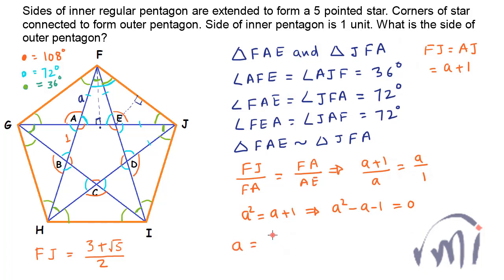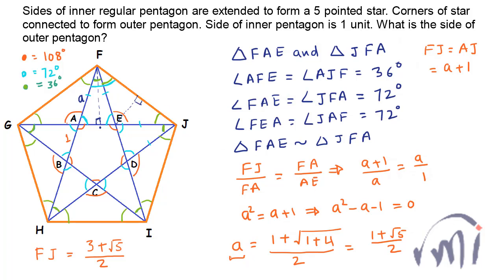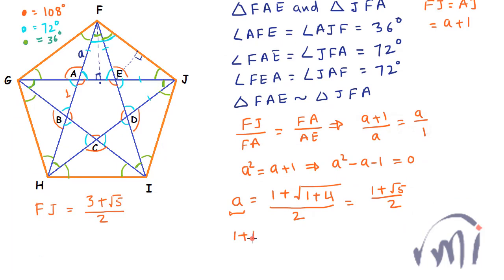Since A must be greater than 1, we take the positive root: A equals (1 + √5) / 2. This is the golden ratio. We need to find FJ, which equals A plus 1, so (1 + √5)/2 + 1 equals (3 + √5)/2. This is the value of A plus 1, and it equals the side FJ. So whichever method you use, the length FJ equals (3 + √5) / 2.